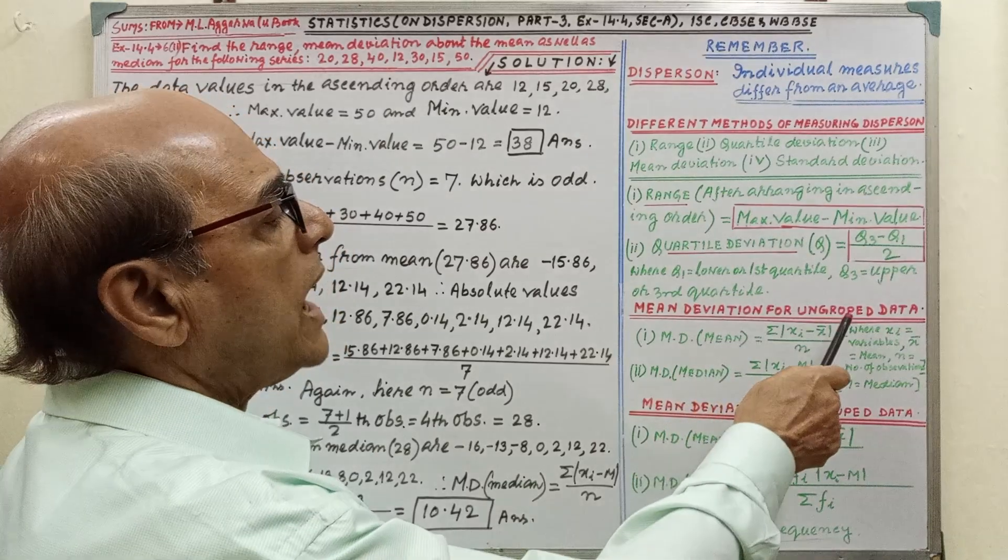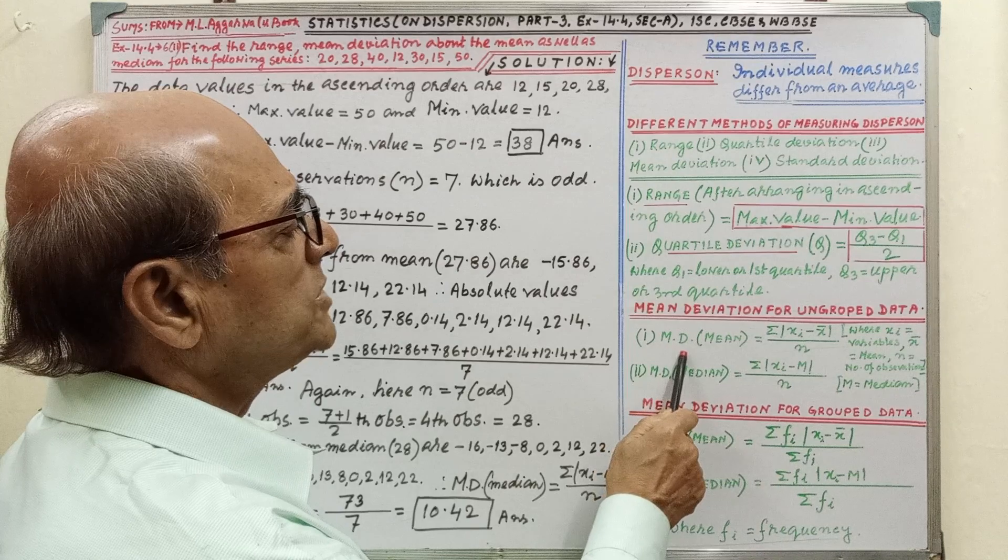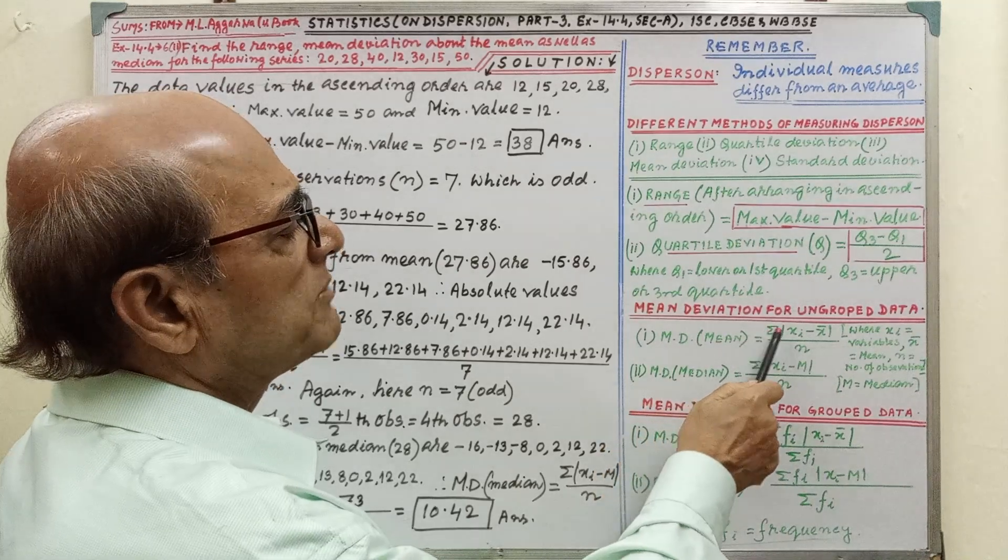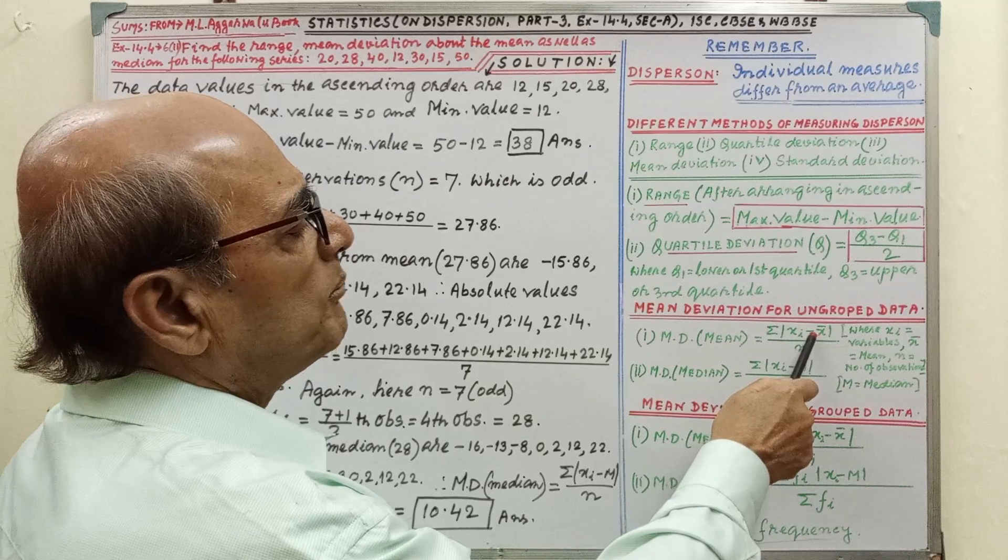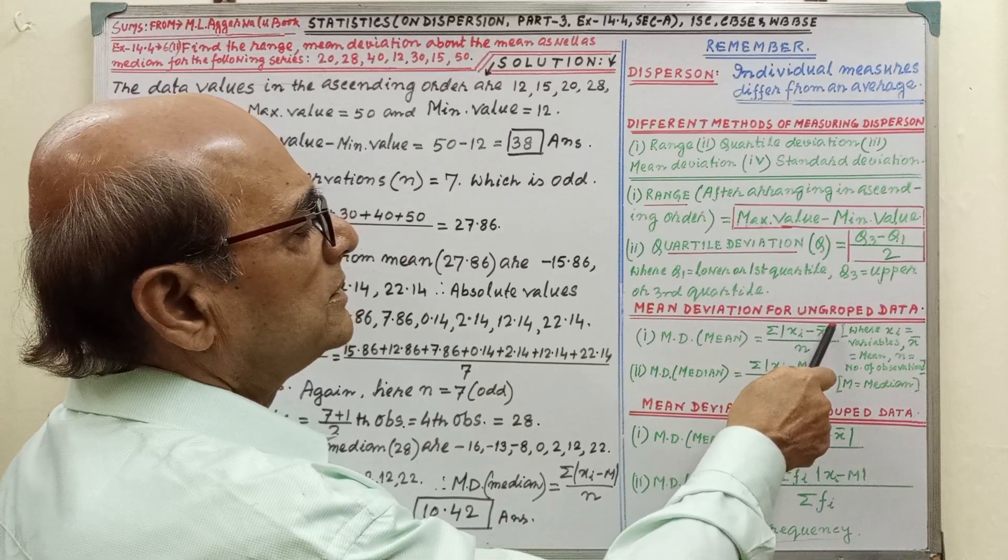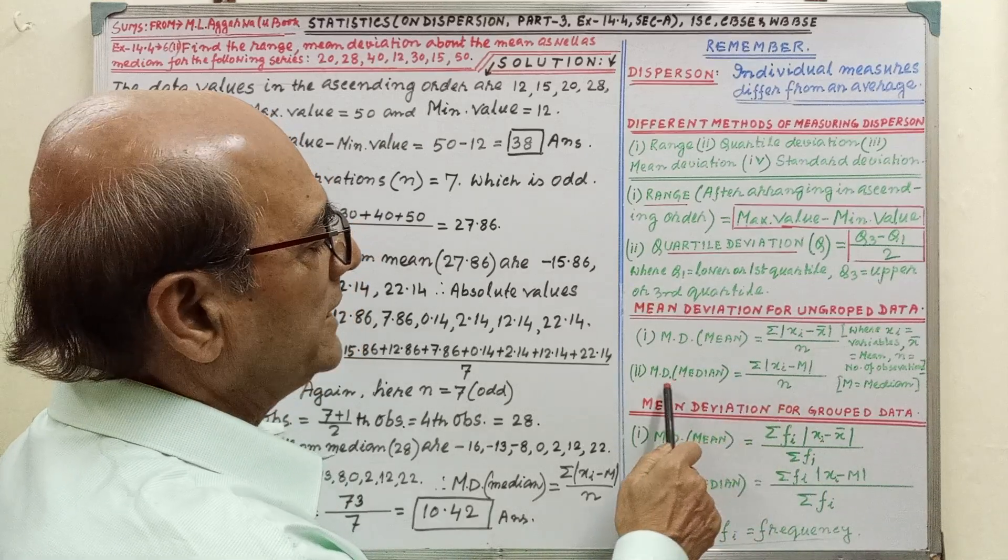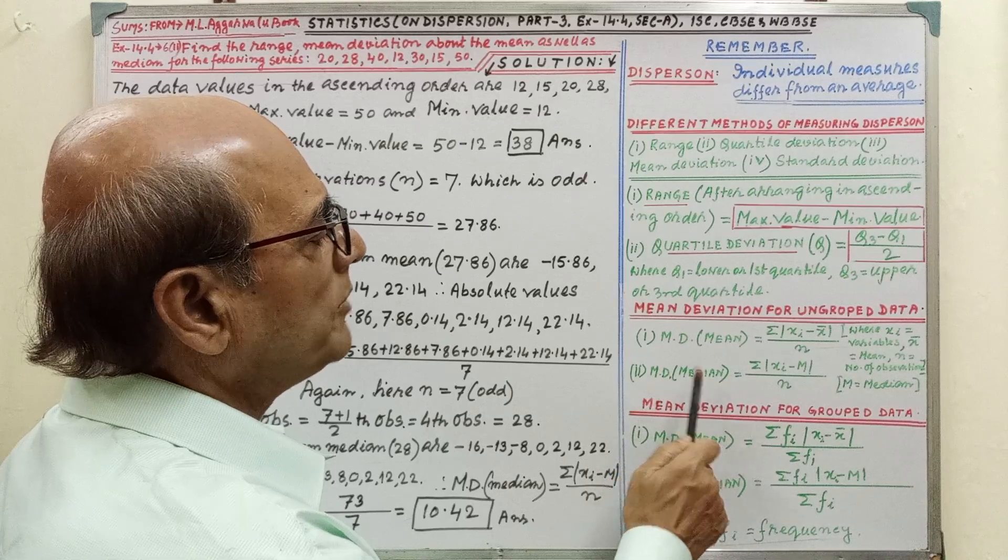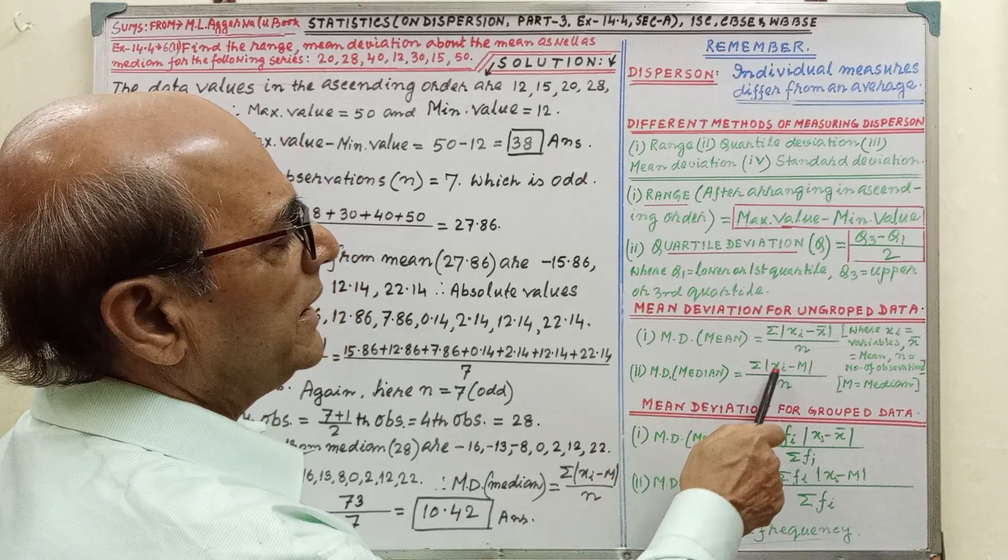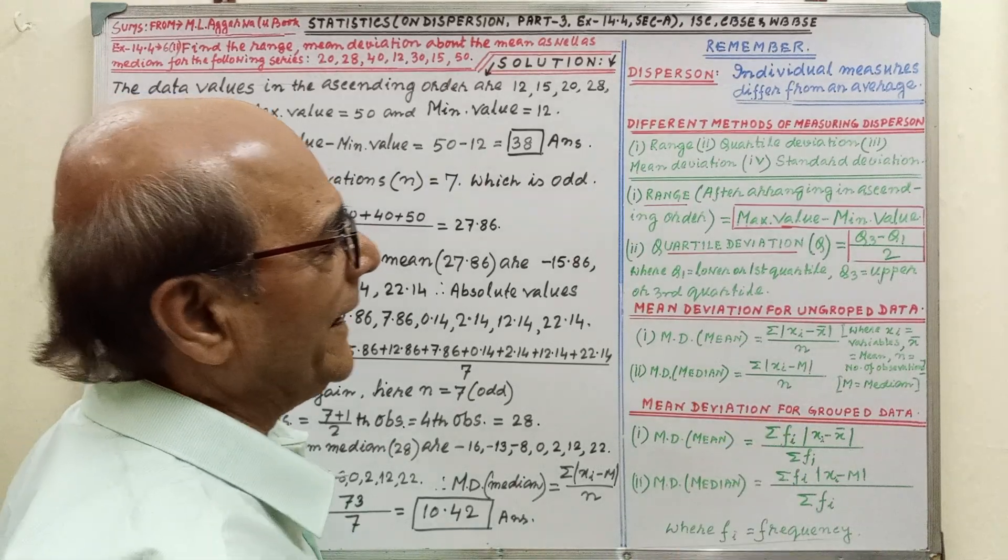Mean deviation for ungrouped data, that is, mean deviation equal to sigma xi minus mean mod divided by n. And median, mean deviation of median, that is, sigma xi minus m mod by n.